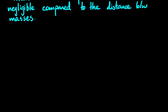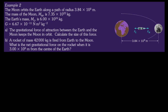Let's look at this question: the Moon orbits the Earth along a path of radius 3.84 × 10⁸ m. The mass of the Moon, mass of the Earth, and gravitational constant are all given. Part A states that the gravitational force of attraction between the Earth and Moon keeps the Moon in orbit — this provides the centripetal force for circular motion. We need to calculate the size of this force.